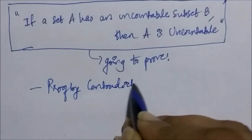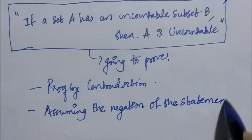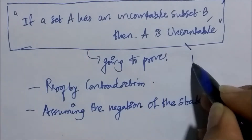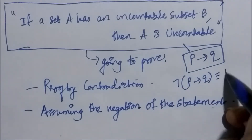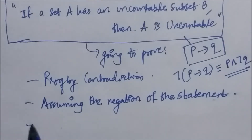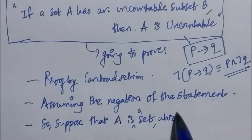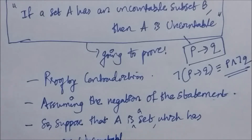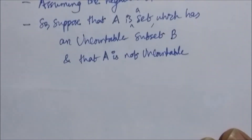Using proof by contradiction, we assume the negation of the statement first. The statement is of the format P implies Q, and the negation of P implies Q is P and not Q. We assume the hypothesis is true and the conclusion is false. So we suppose that A is a set which has an uncountable subset B, and that A is not uncountable but a countable set.